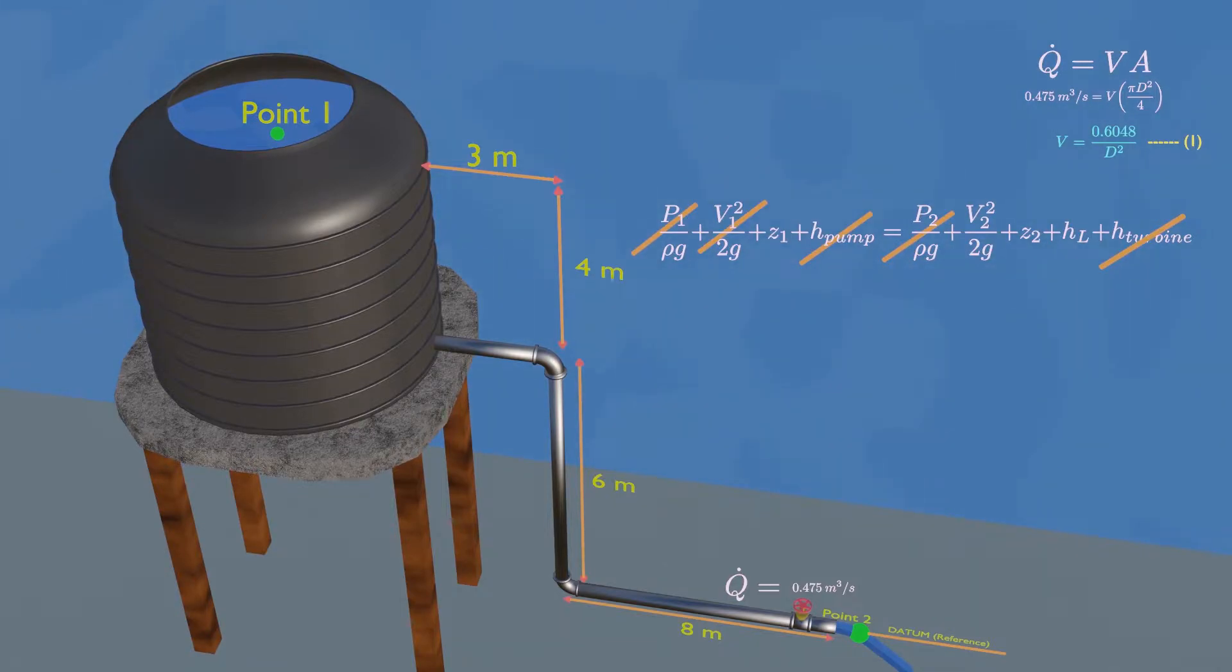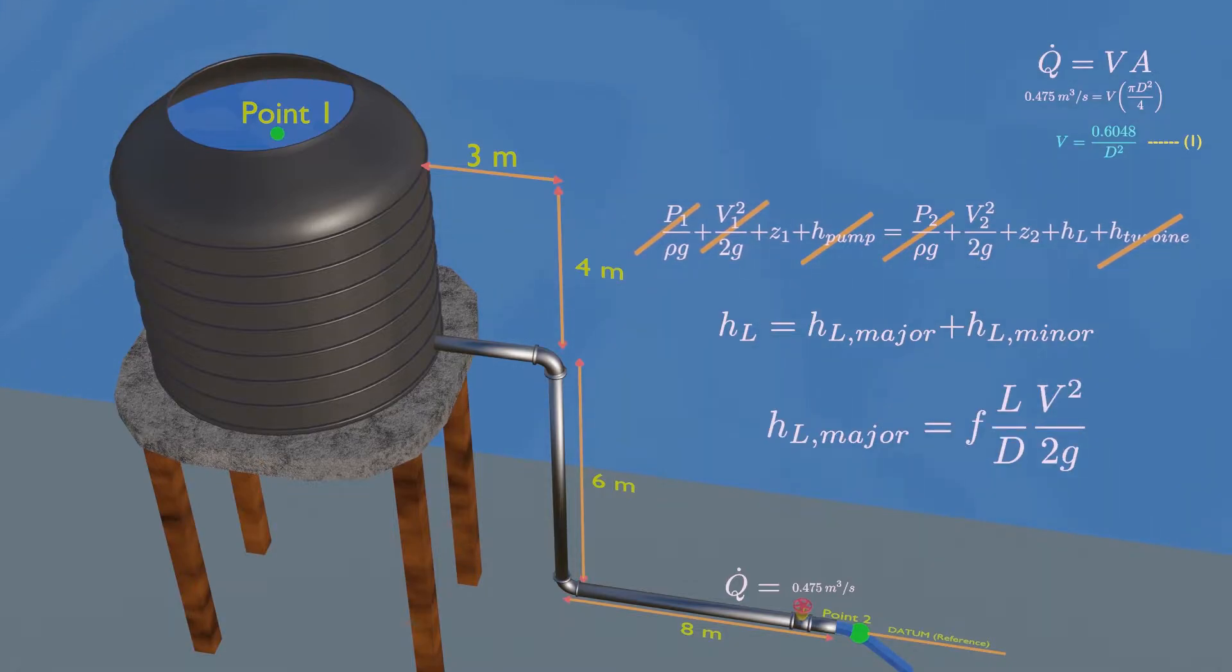When designing pipe, you must account for two types of losses: one is major head loss, and other is minor loss. We can calculate major loss using this equation.